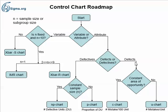If we're dealing with defects, we're asked whether or not the area of opportunity is constant. If the answer is yes, we use a C chart — which is perhaps the number of mistakes per 100 units. And if it's no, then we use a U chart, which is the number of mistakes per unit. The difference is that with a C chart we have an equal number of units each time because the area of opportunity is constant, whereas with a U chart we do not.